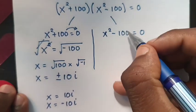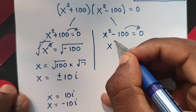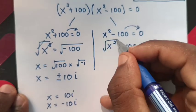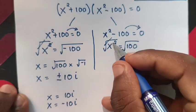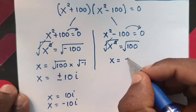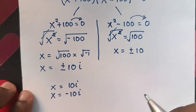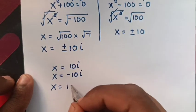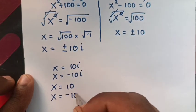From Case 2, we take negative 100 to the right side, so x² equals 100. Then we apply the square root to both sides — the square root cancels with the square — giving x equals plus or minus the square root of 100, which is plus or minus 10. So the values of x are x = 10 and x = −10.